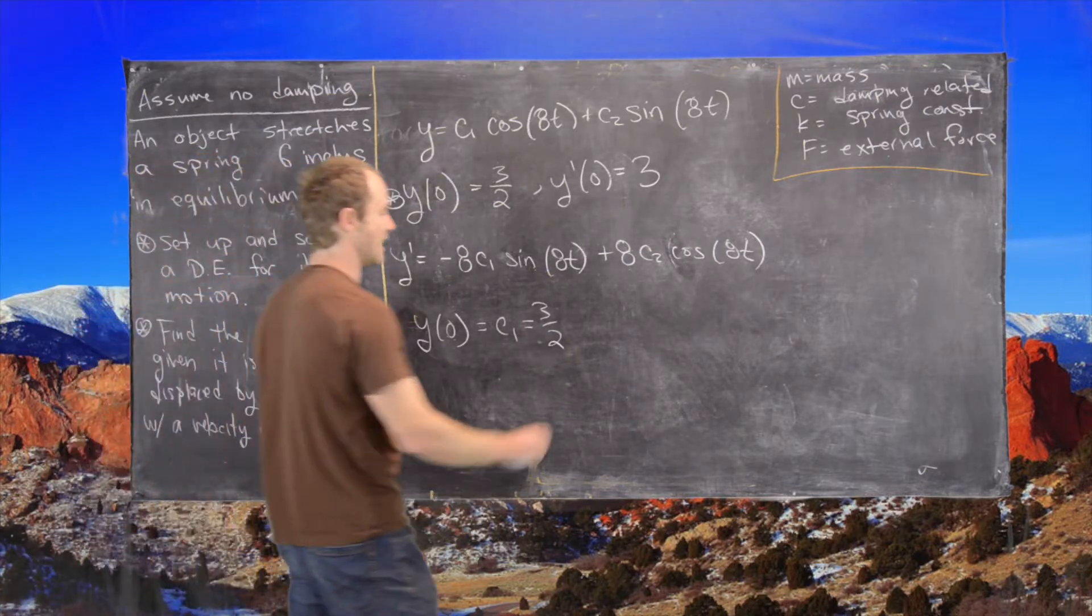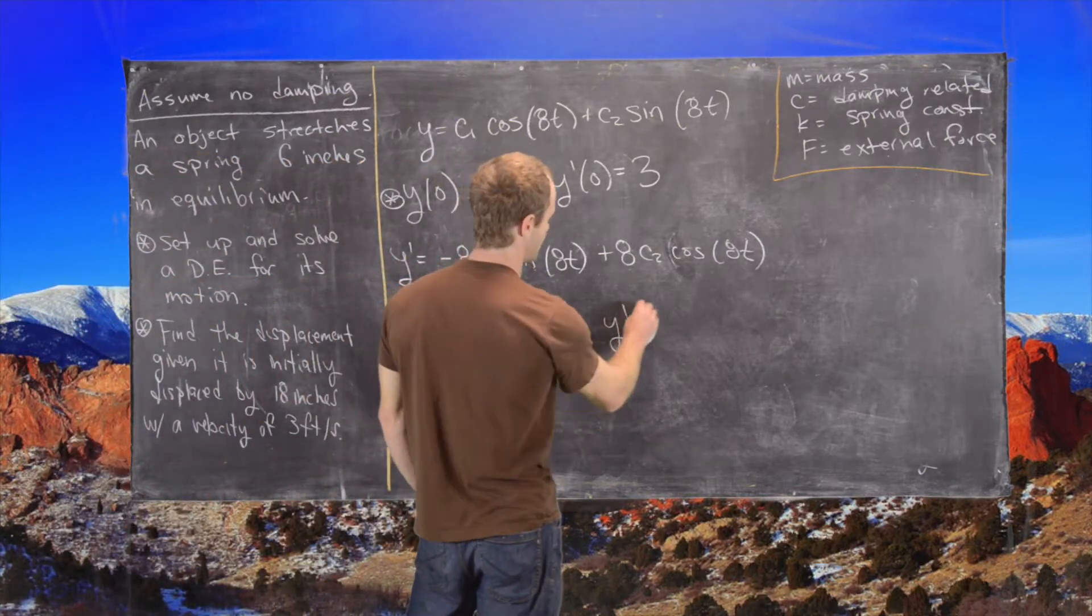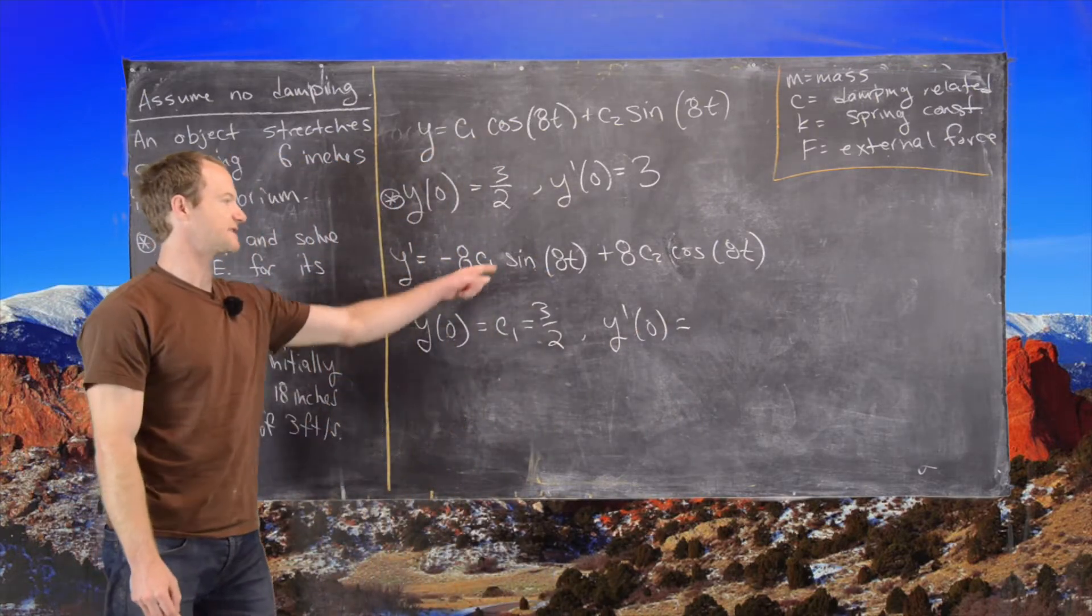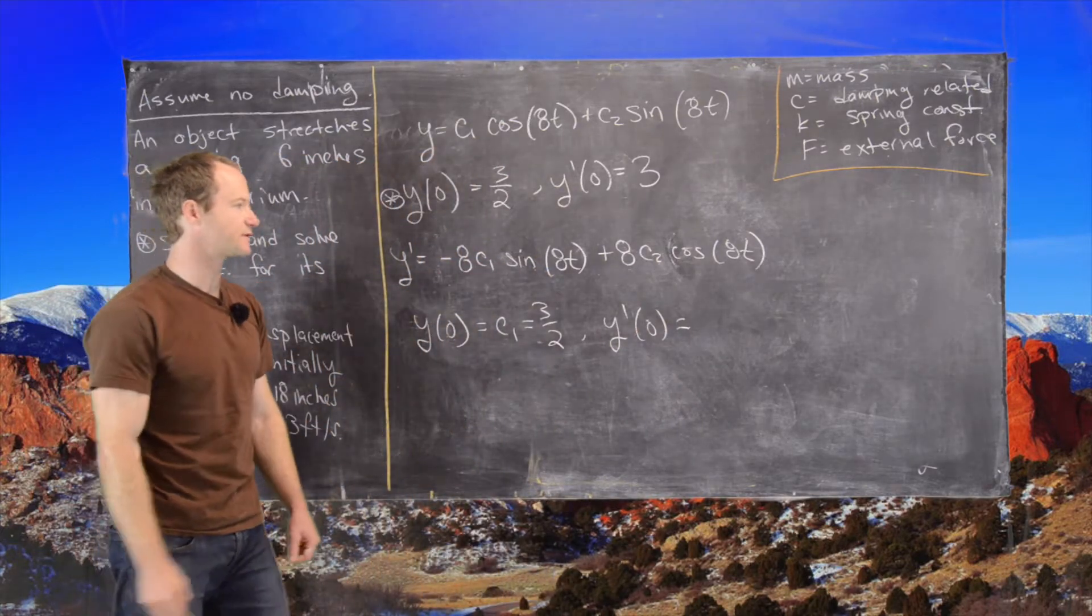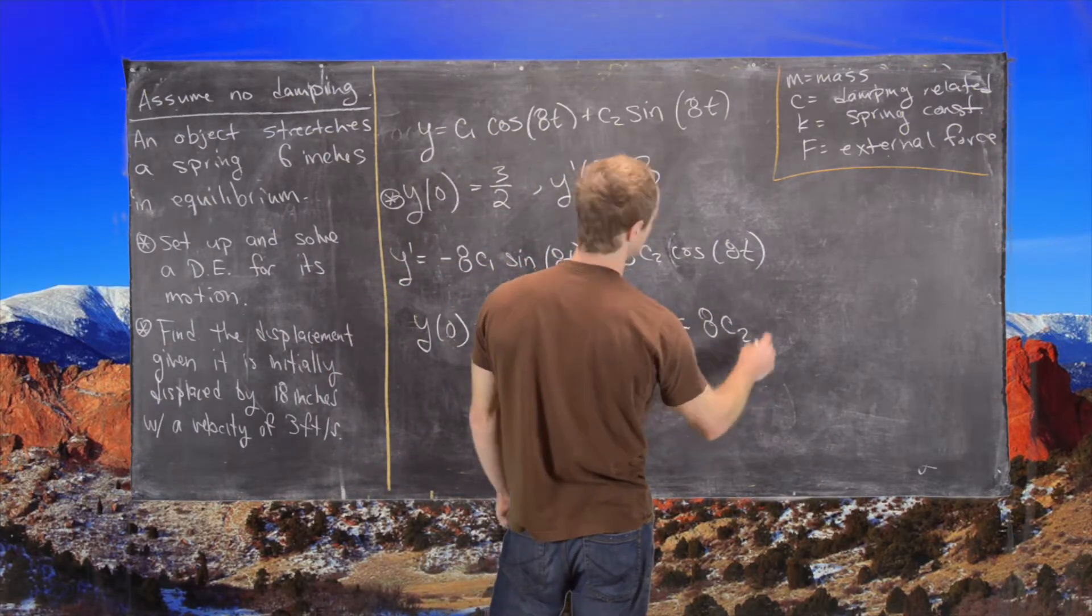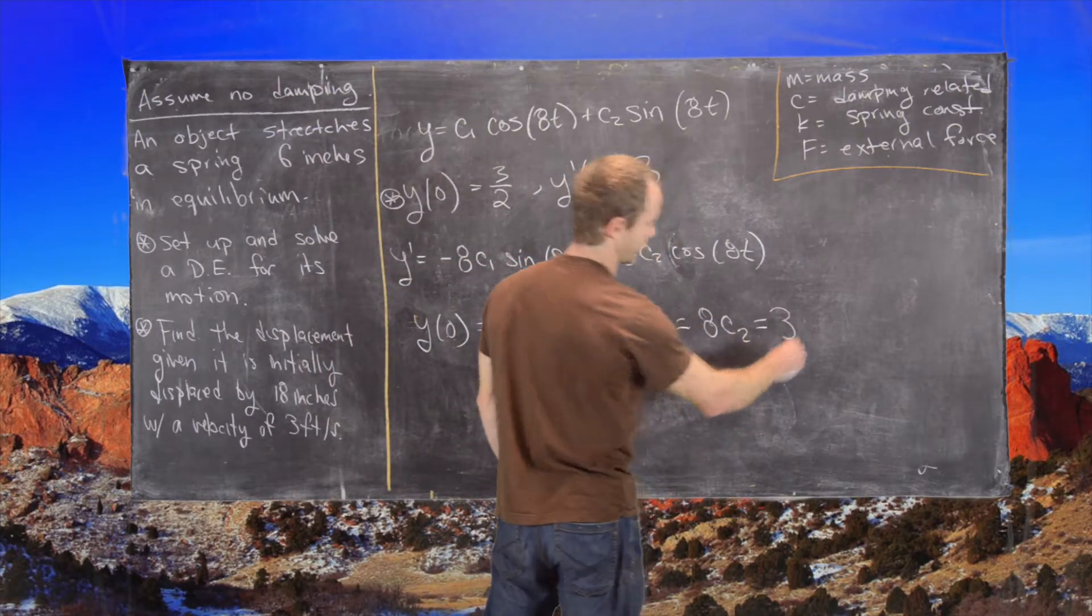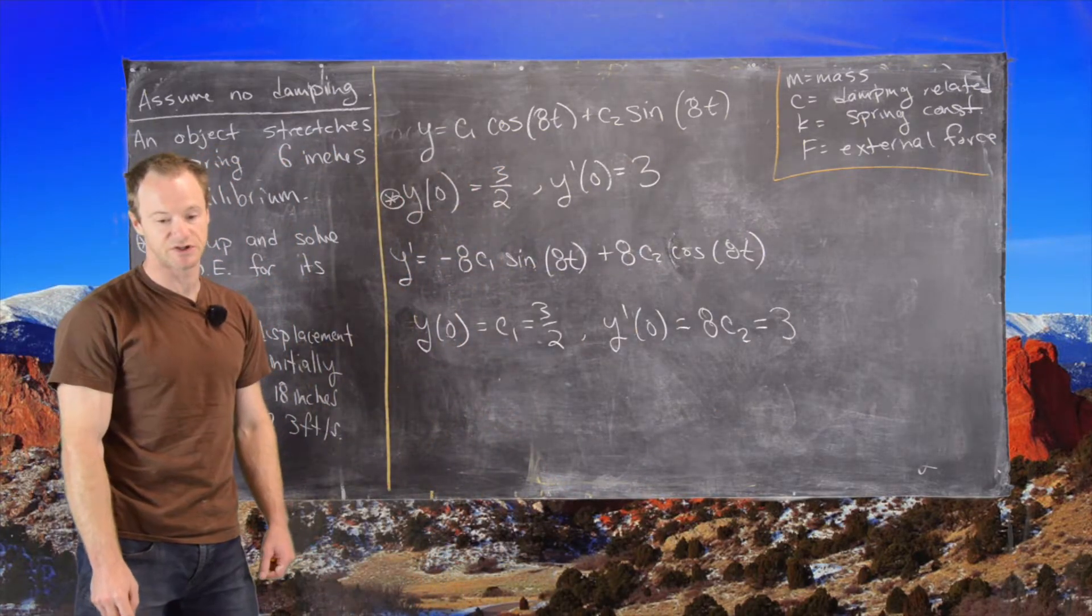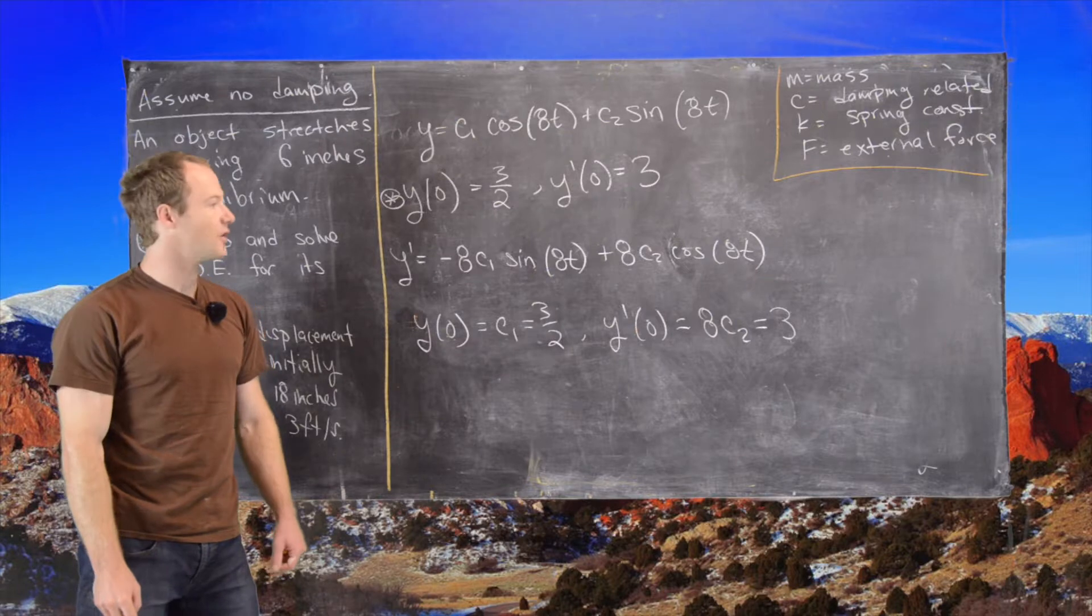And then we have y prime of 0. So again we'll use the fact that sine of 0 is 0 and cosine of 0 is 1. So this is 8c2, which is equal to 3. Great. So that gives us c2 is equal to 3 over 8.